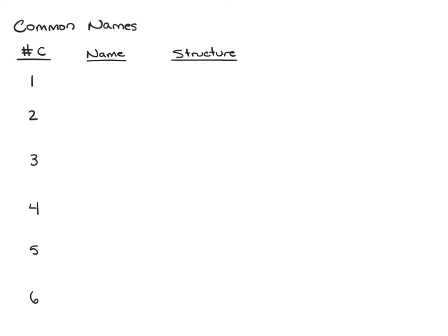Let's look at common names for carboxylic acids from one through six carbons — you want to make sure you know these. Starting with one carbon: a carboxylic acid with just one carbon has only the carbonyl carbon with a hydrogen on it. This is called formic acid.